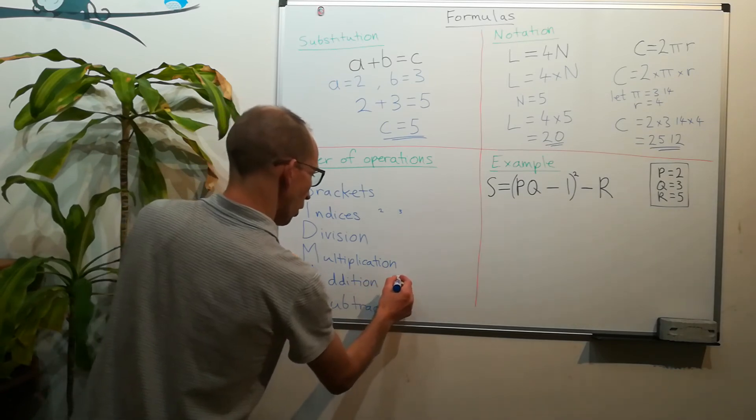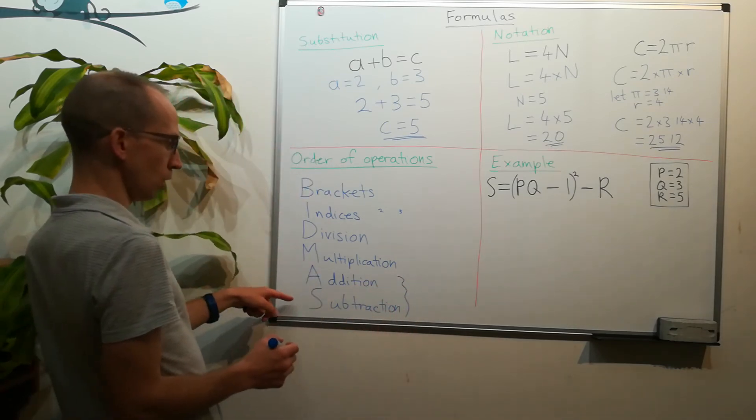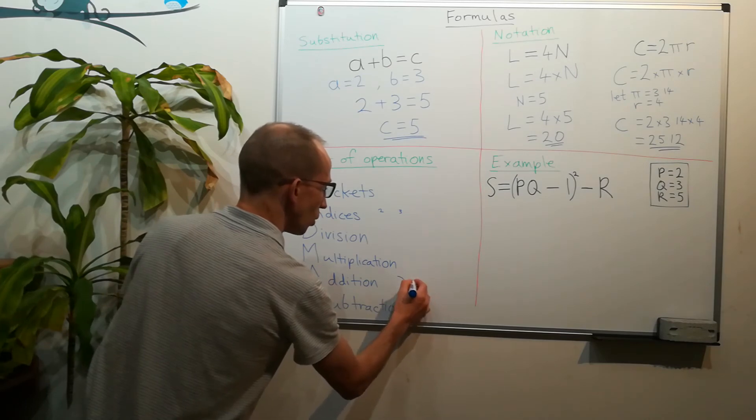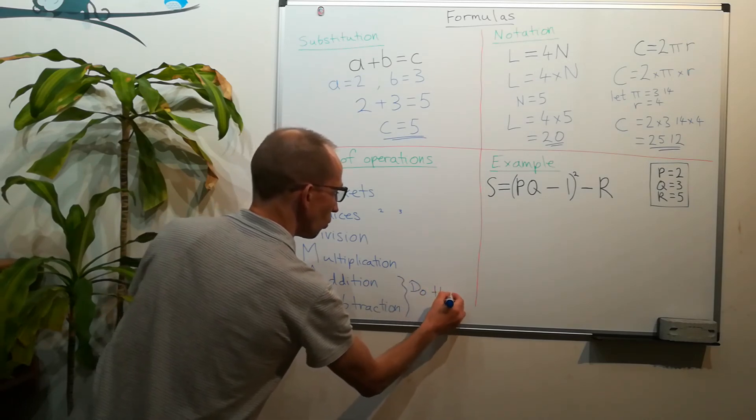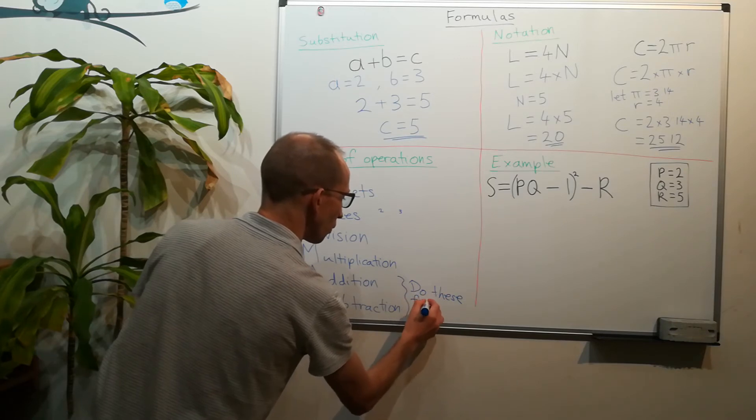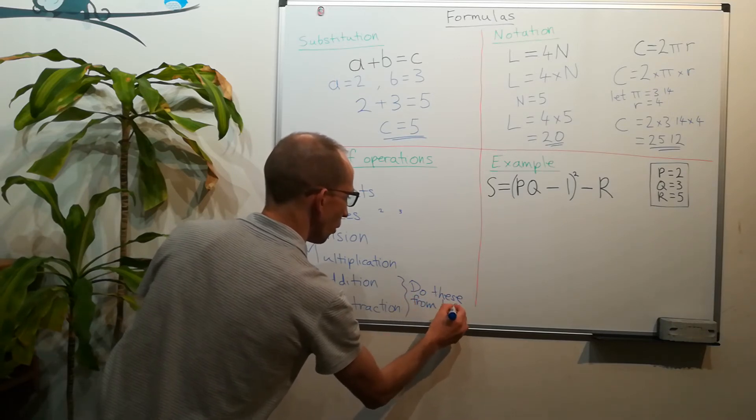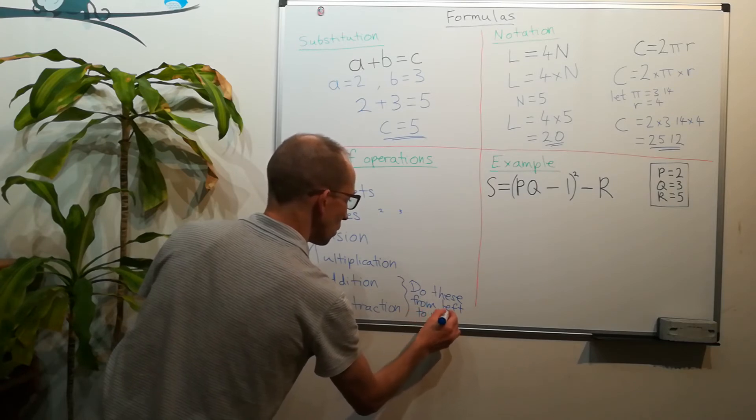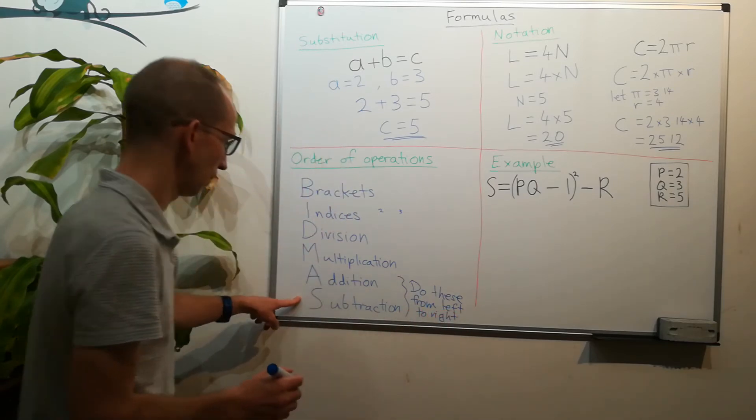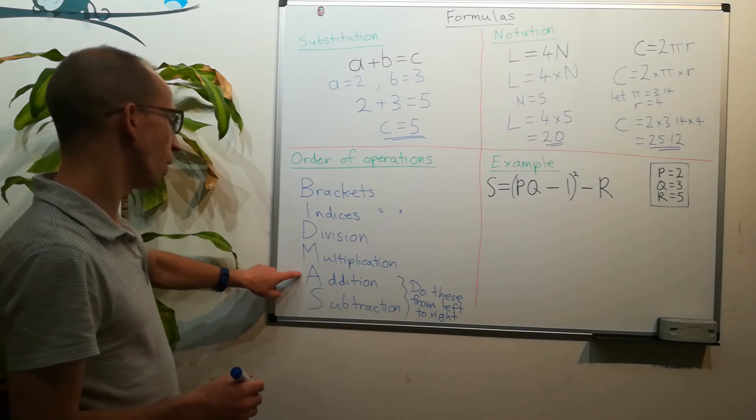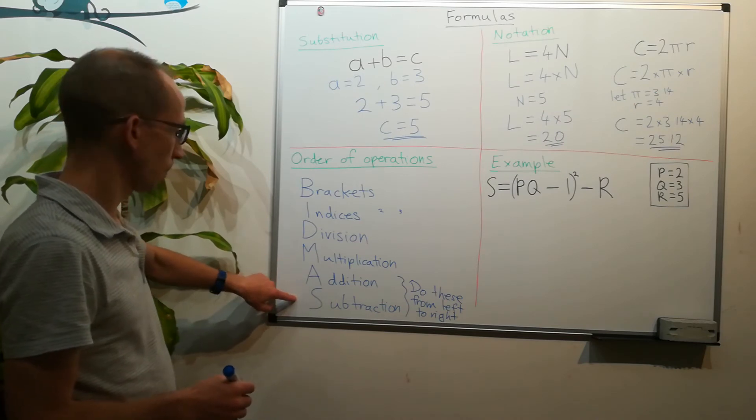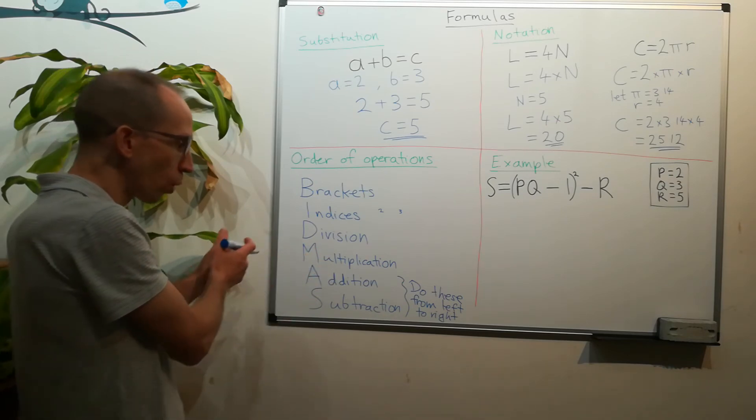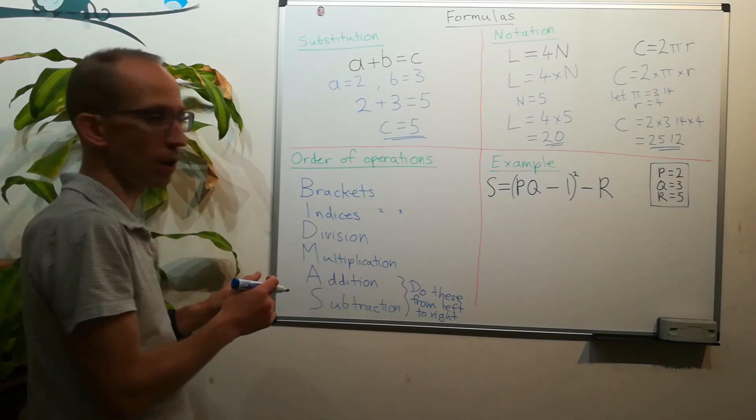The important thing with addition and subtraction is that we just do these from left to right. So we don't always have to do the addition first. If we've got a subtraction followed by an addition, we just do it from left to right, we do it in that order.